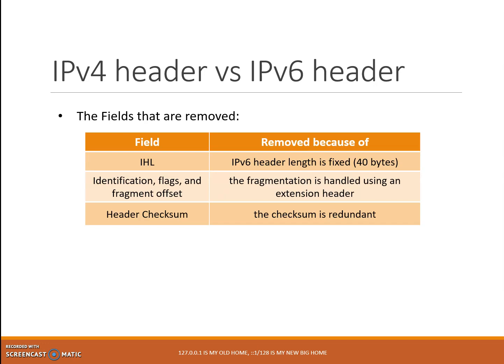Number 3: header checksum. Data link layer technologies such as Ethernet perform their own checksum, and transport layer protocols such as TCP and UDP have their own checksum as well. Therefore, the checksum becomes redundant and the header checksum field is removed in IPv6.